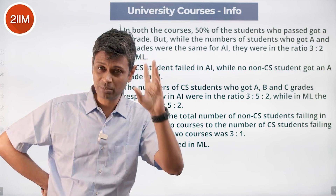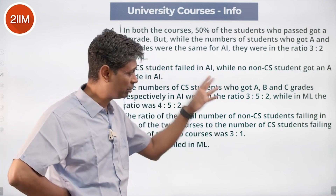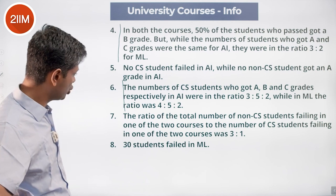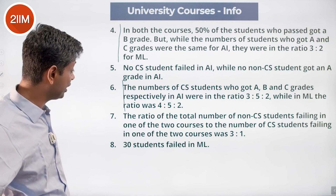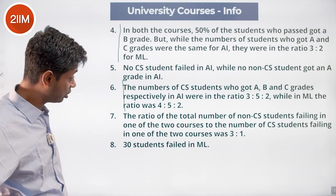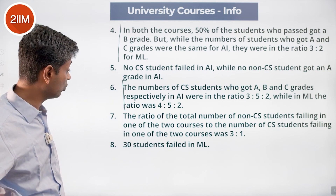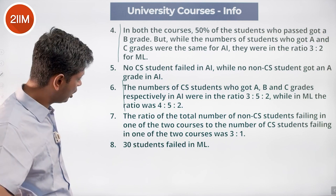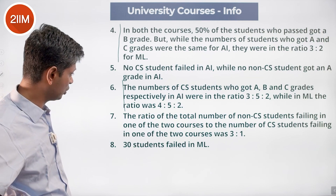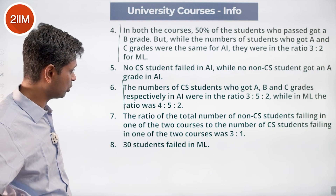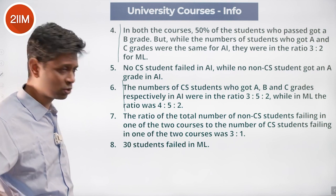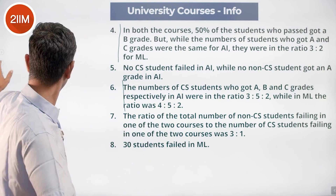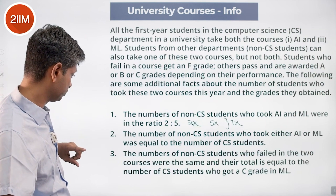With a clear ratio given for A, B, C, we can grab that in one variable. The ratio of the total number of non-CS students failing in one of the two courses to the number of CS students failing in one of the two courses was 3:1. Also, the number of non-CS students failing in the two courses individually was equal.